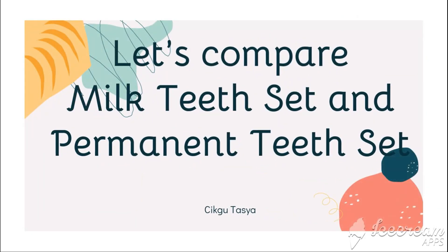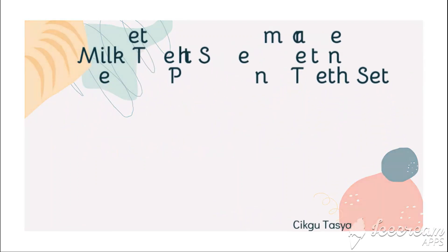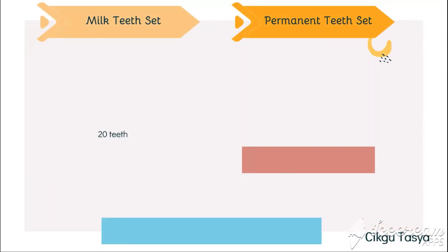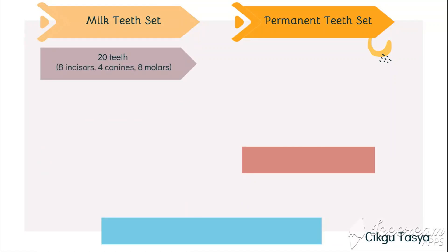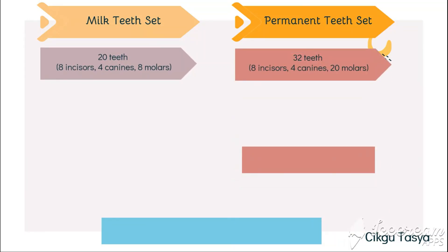Now we're going to compare the milk teeth set and the permanent teeth set. For milk teeth: 20 teeth — eight incisors, four canines, and eight molars. For permanent teeth: 32 teeth — eight incisors, four canines, and 20 molars. You can see the numbers are different because milk teeth have fewer molars.